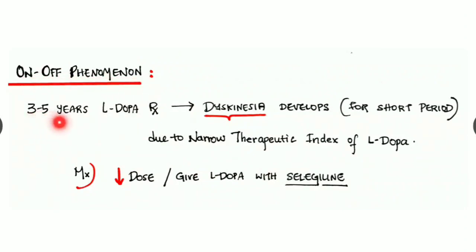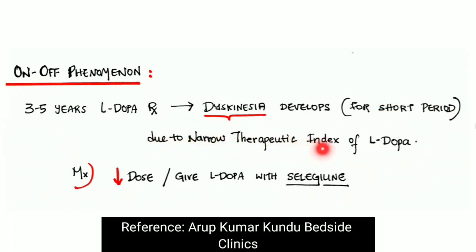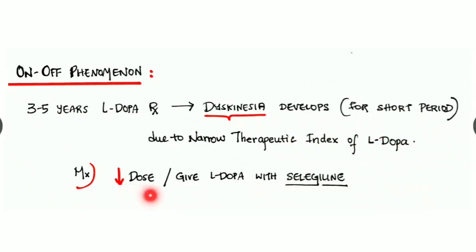What is on-off phenomenon? After three to five years of levodopa treatment, dyskinesia can develop even for a short period of time. It is due to narrow therapeutic index of levodopa. How we are managing it? By decreasing the dosage of levodopa or giving levodopa in combination with selegiline.